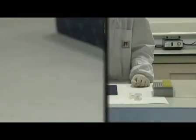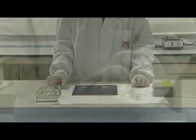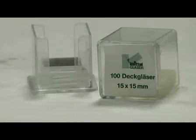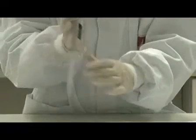The volume of the probe mixture added will vary according to the size of the area you want to hybridize. As a reference, for a 15 by 15 cover slide, a volume of 5 microliters is sufficient.